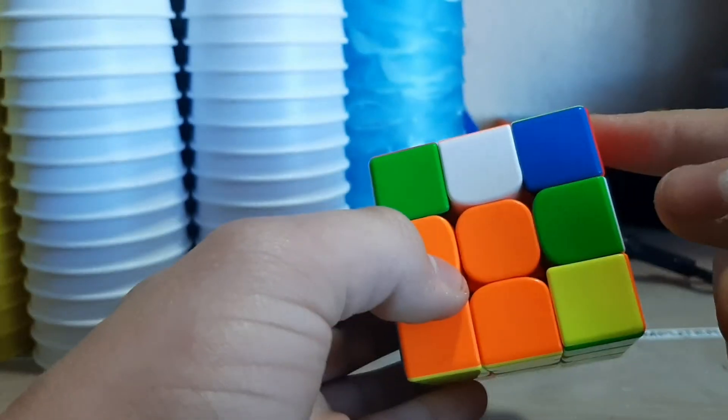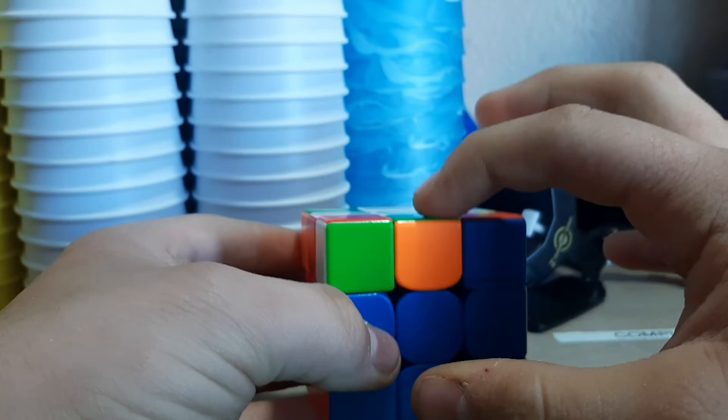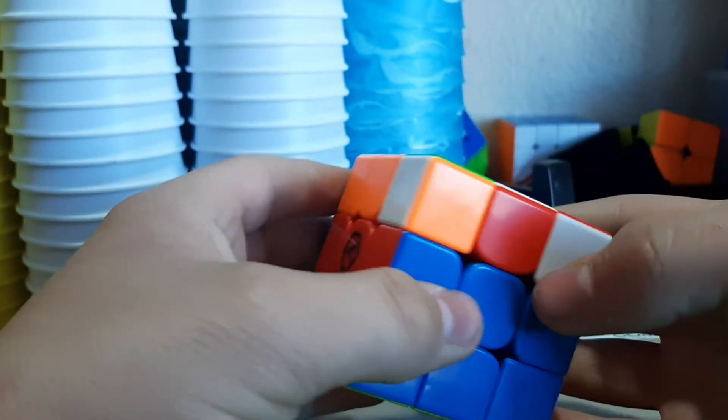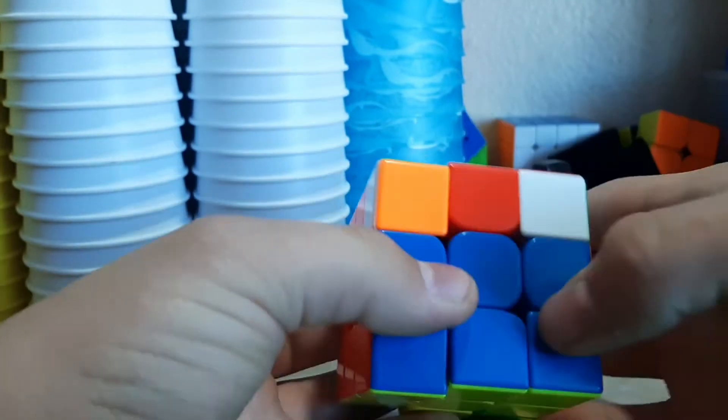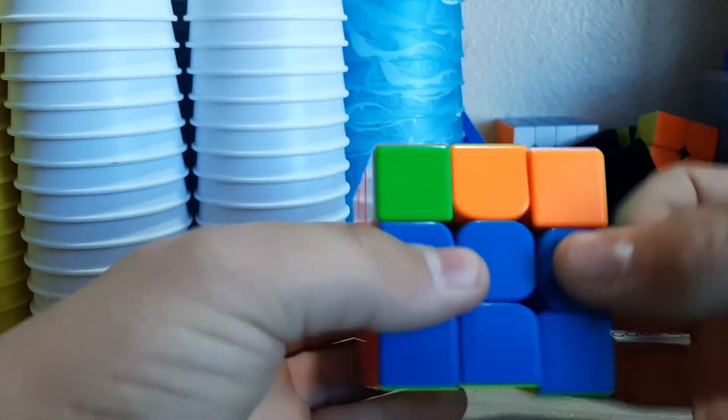From here I noticed this P-shape with this. I didn't realize it was going to be a last layer skip, but I knew it was going to skip OLL. So I did it, and then I saw this and stopped. Then I realized, oh wait, that actually was a last layer skip.